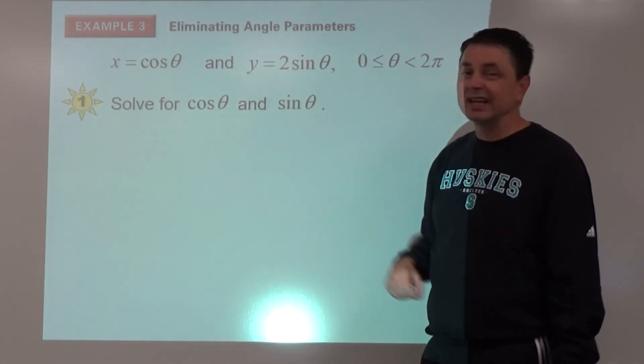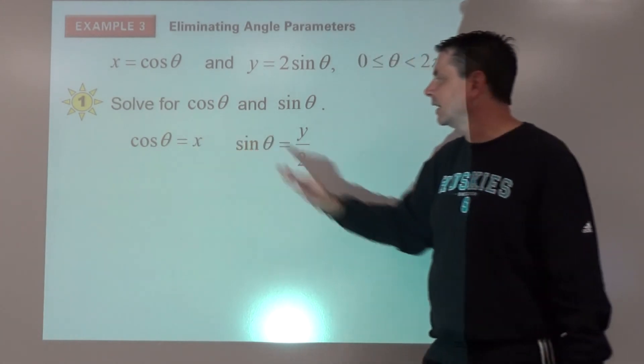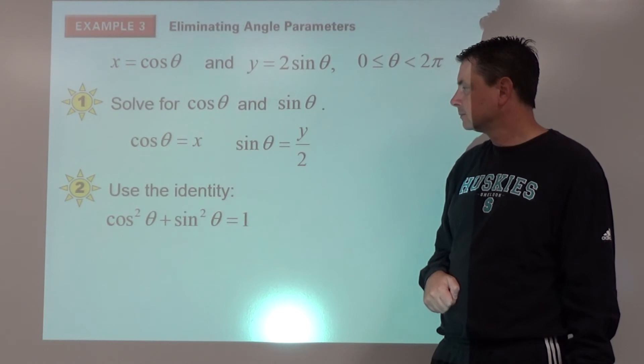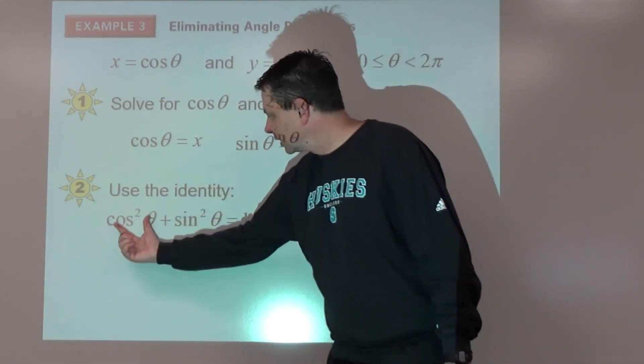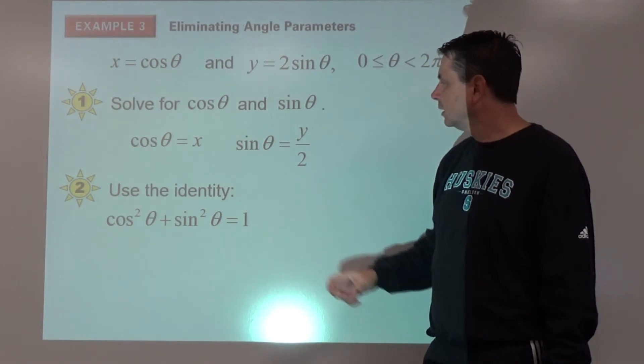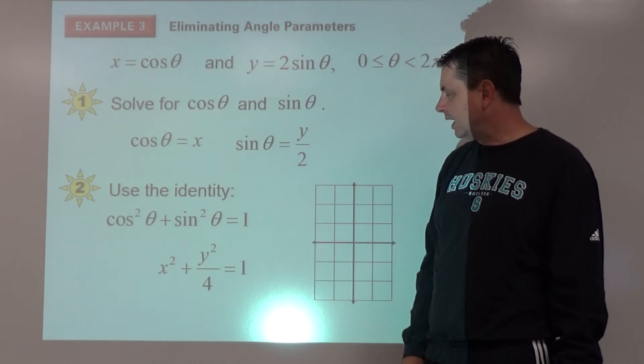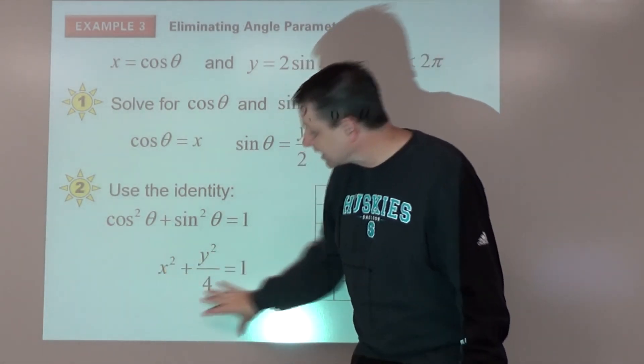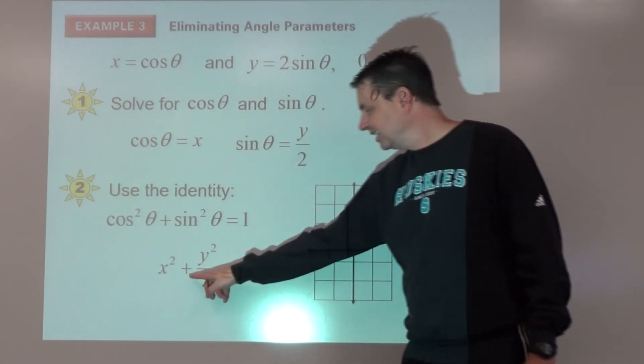Now to relate cos θ and sin θ, we're going to use the identity. The order here doesn't really matter. If cos θ is x, cos²θ is x², and we square both sides here, we're going to get y²/4. That's equal to one. And we should be able to recognize that as a rectangular equation. What is it? It's an ellipse.